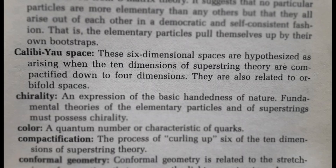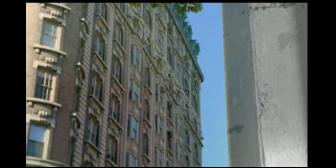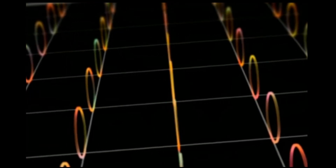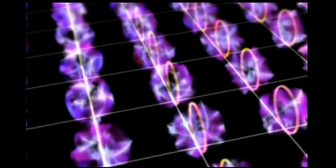Calabi-Yau spaces are six-dimensional spaces hypothesized as arising when the ten dimensions of superstring theory are compactified down to four dimensions. Kaluza and Klein proposed that if we could shrink down billions of times, we'd find one extra tiny curled-up dimension located at every point in space. The mathematics of string theory demand not one but six extra dimensions.